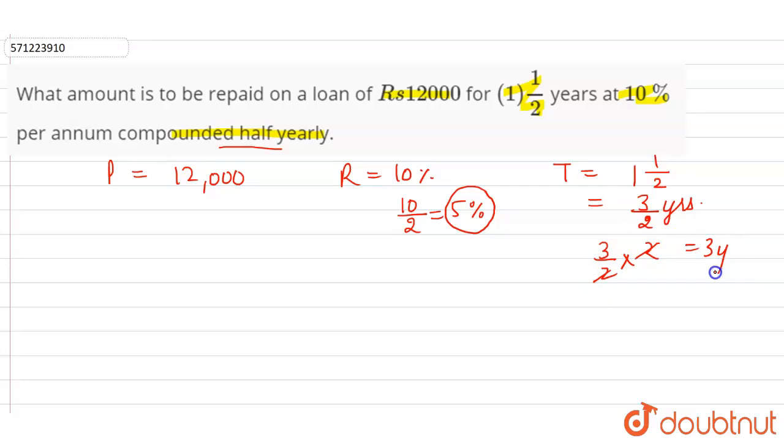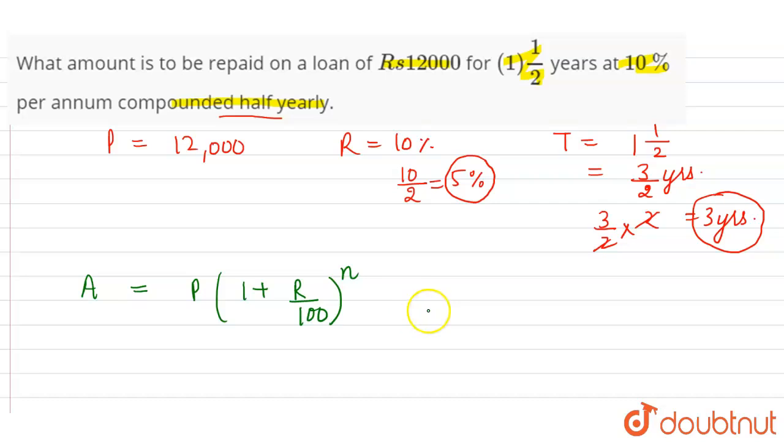That is equal to three years. So time is 3 years, rate of interest is 5 percent, and principle amount is twelve thousand. Now the formula for calculating the amount on compound interest is: A equals P times one plus R divided by 100 raised to the power n, where n is the time.